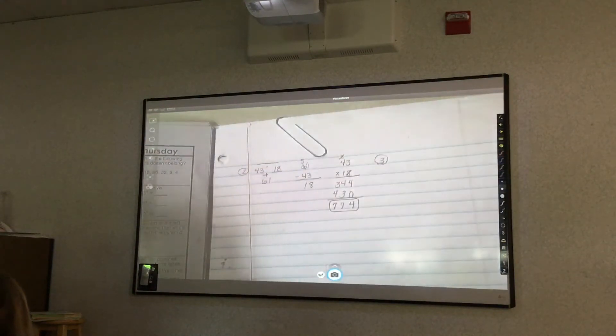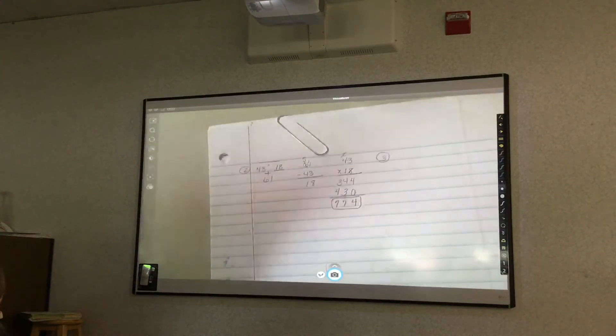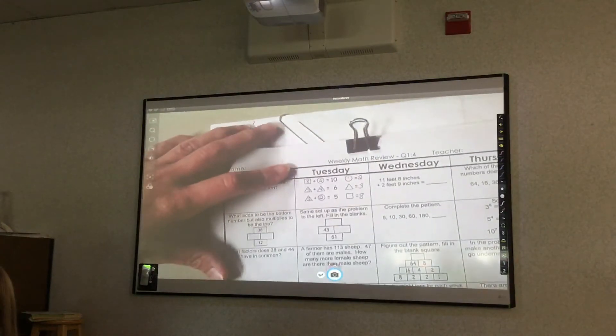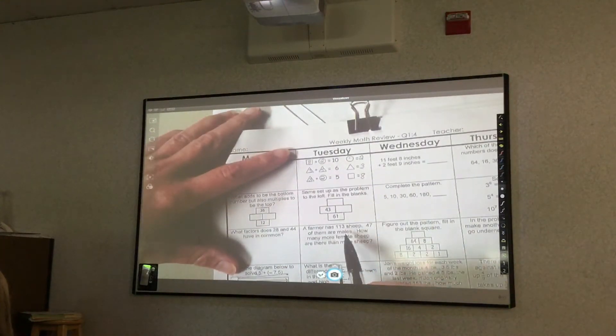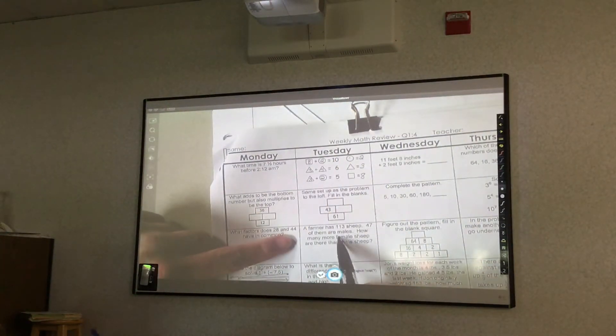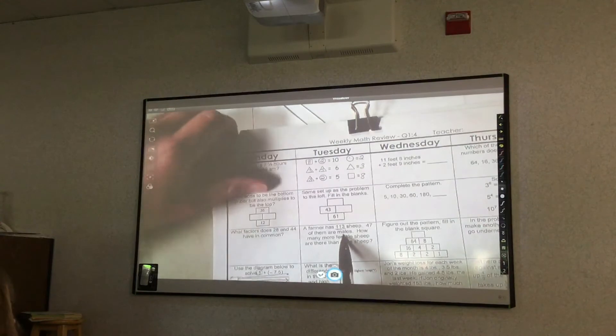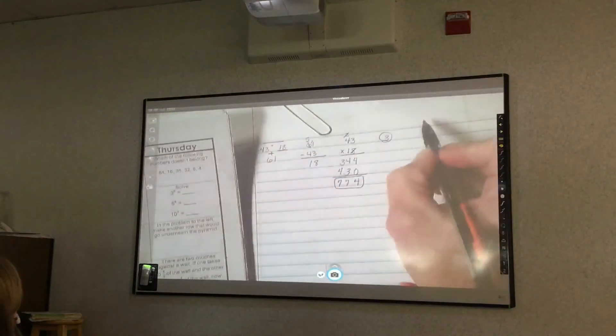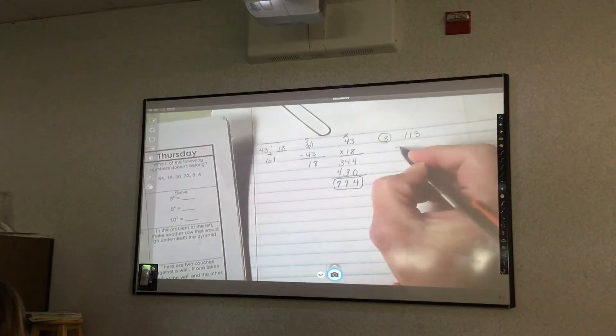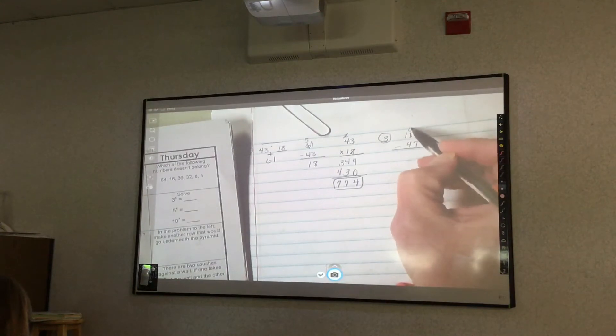Number 3 is a multi-step problem. It takes more than one step to solve the problem. So it's one of those that you want to read more than once. A farmer has 113 sheep. 47 of them are males. How many more female sheep are there than male sheep? So first I know there's a total of 113 sheep. 47 are males. So I have to figure out how many females there are first. So I'm going to do 113 minus 47.